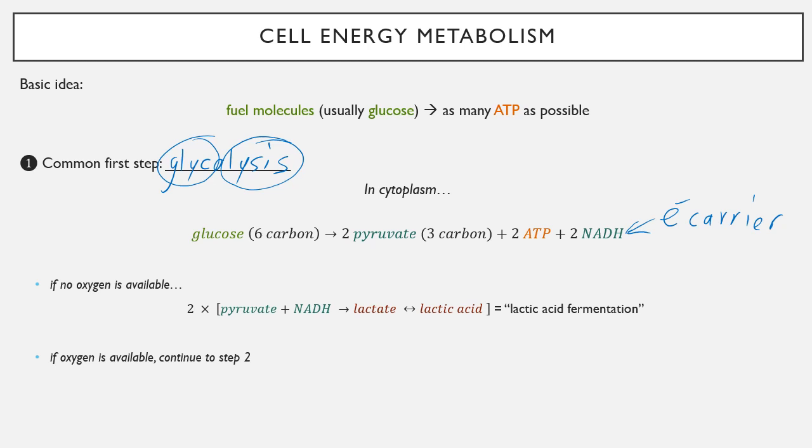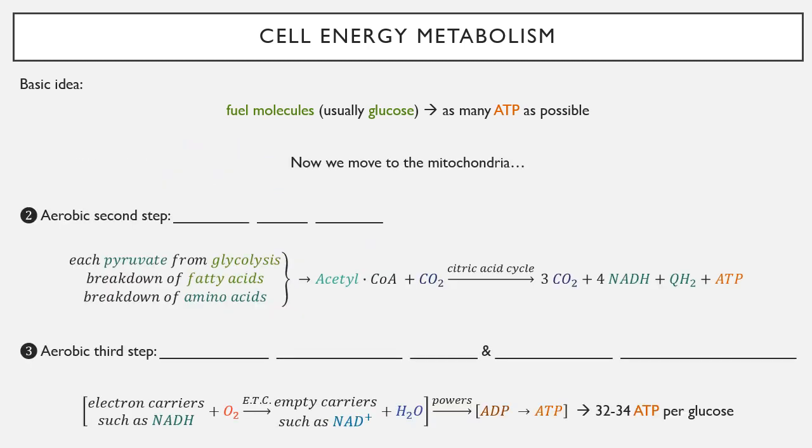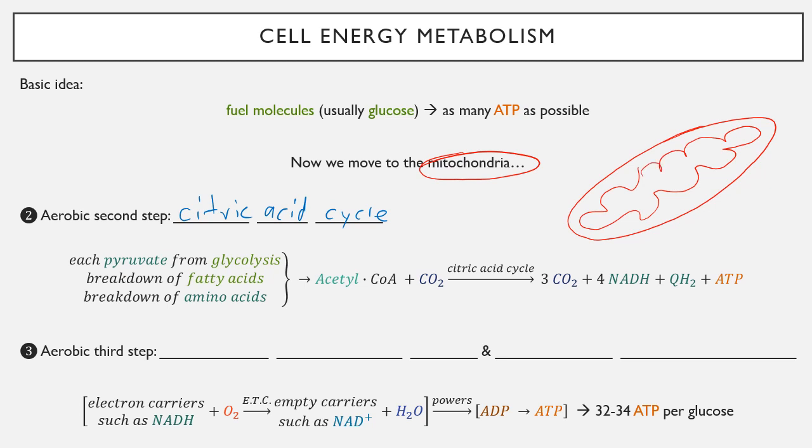So if oxygen is available, however, if we're in a high oxygen environment, either because our cardiovascular system is keeping up well with our exercise or because we're not exercising that much right now, we can continue to step two. Step two is referred to as the citric acid cycle. The citric acid cycle and the third step both happen in the mitochondria. The citric acid cycle happens in the inner part of the membrane.